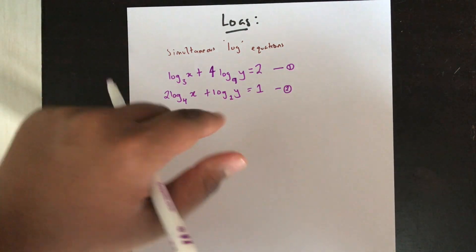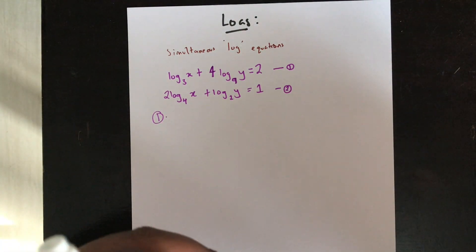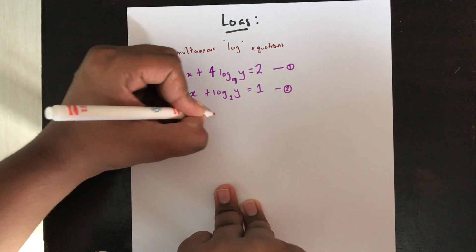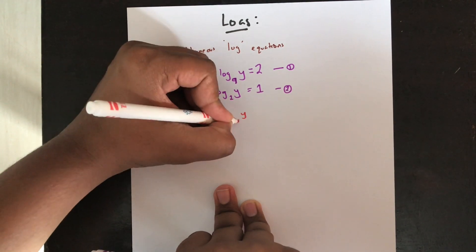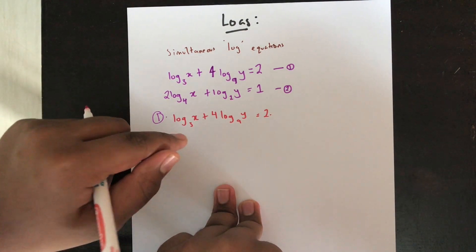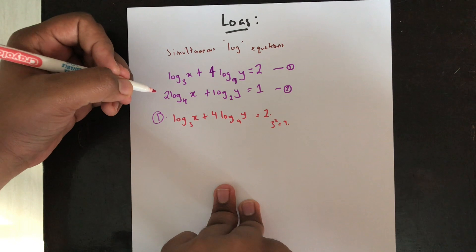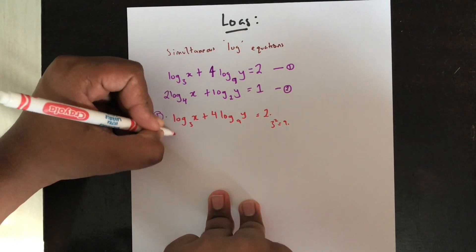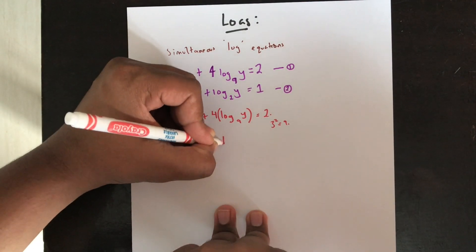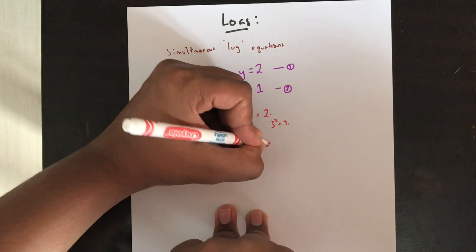Whenever you're solving a logarithmic equation you need to make sure it's in its simplest form. Let's start with equation 1: log x base 3 plus 4 log y base 9 equals 2. I want to change everything to base 3, because 9 is a power of 3 — specifically 3 squared equals 9. So this can be written as log x base 3 plus 4 times log y base 3 over log 9 base 3, equals 2.